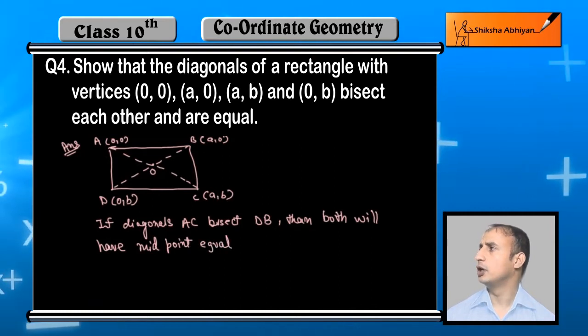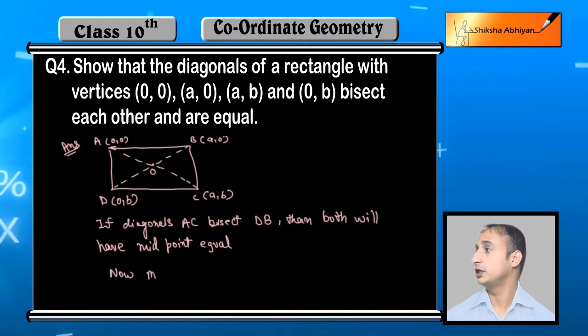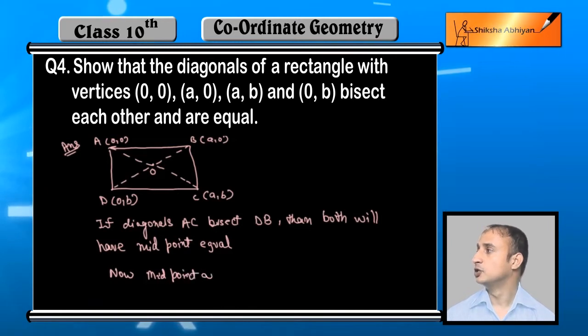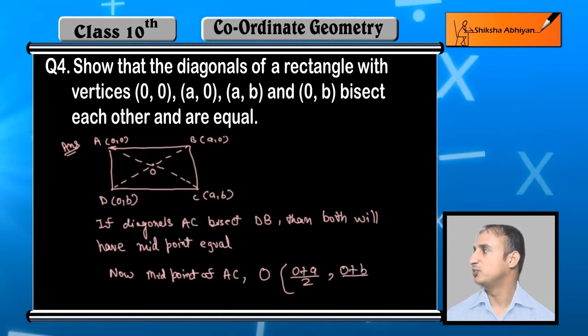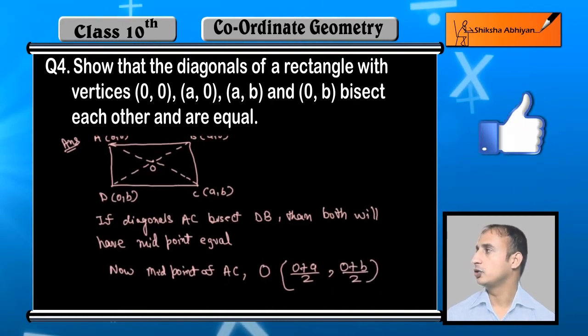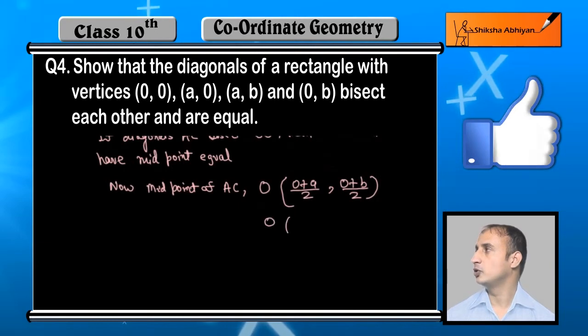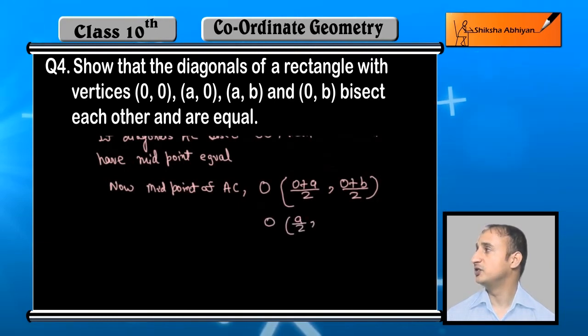Let's calculate. First, find the midpoint of AC. The midpoint formula is (x1+x2)/2, (y1+y2)/2. So this is (0+a)/2, (0+b)/2. Solving this: (0+a)/2 is a/2, and (0+b)/2 is b/2.